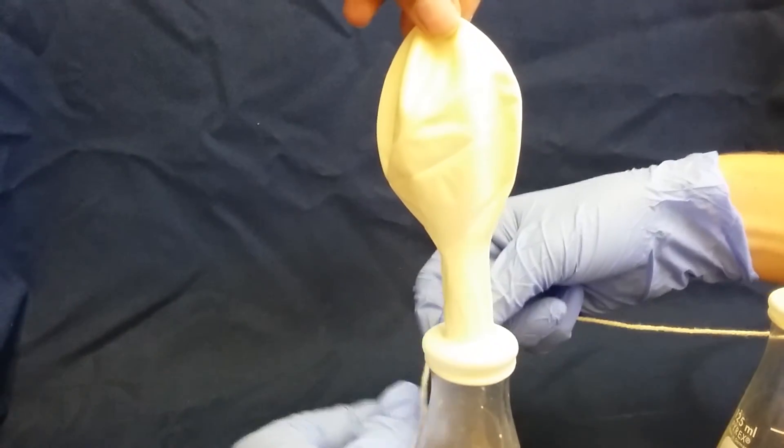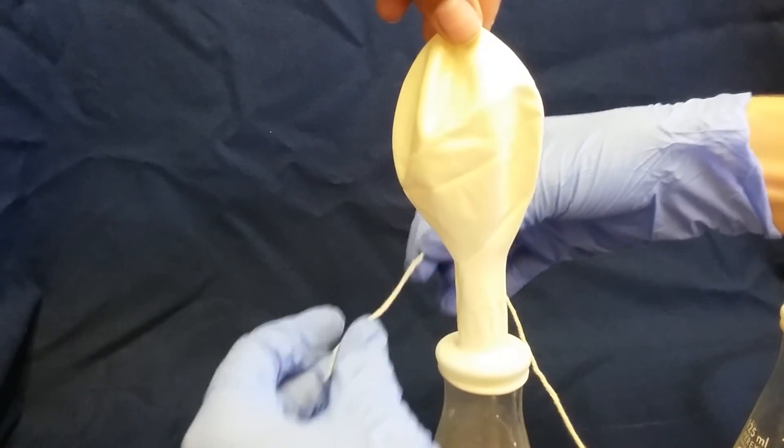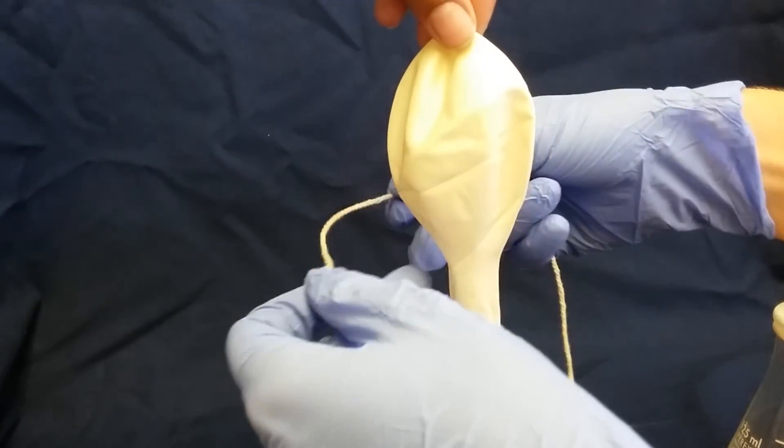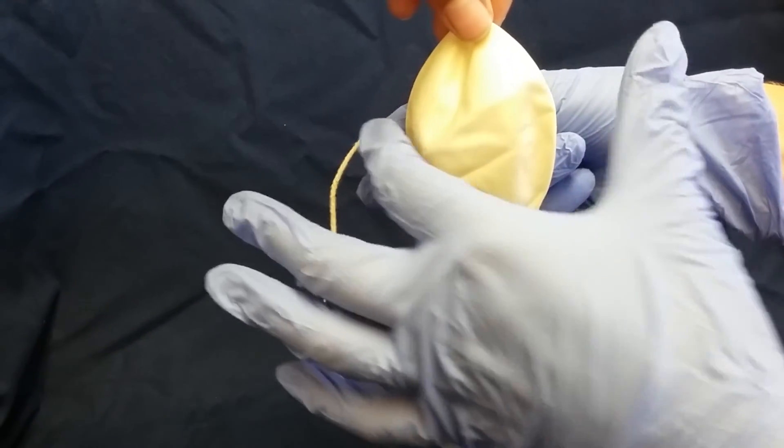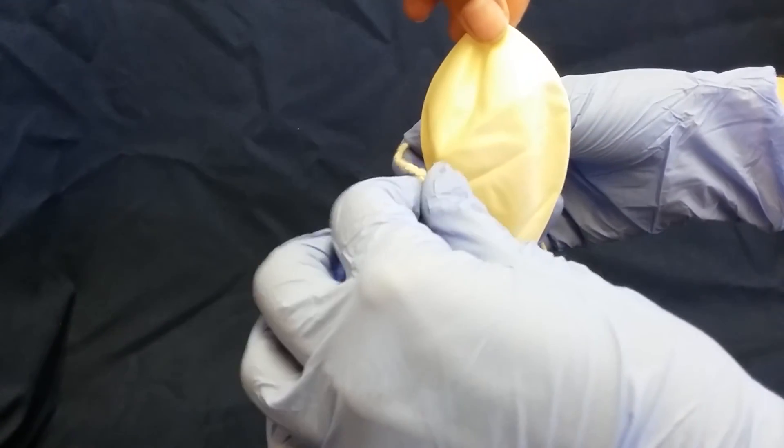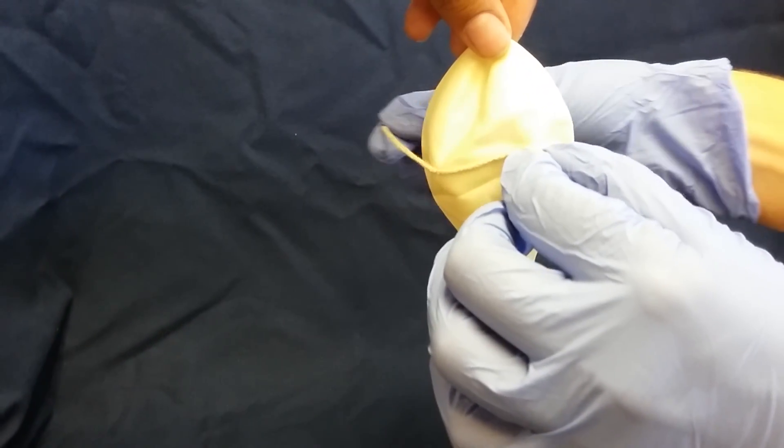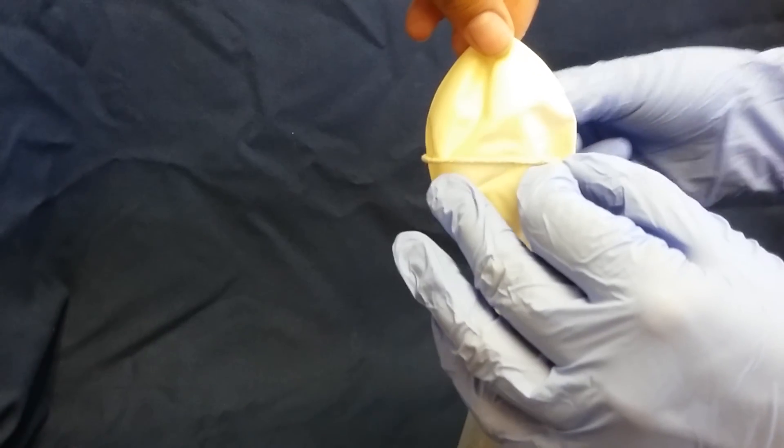All right, to measure the circumference of the balloon, you're going to use a string because the ruler doesn't go around the balloon so well. We want to put the string around the fattest part of the balloon so that we do it at the same place every time. That way we can make accurate comparisons.